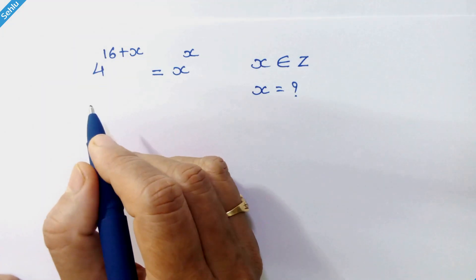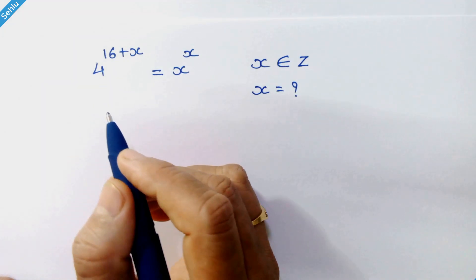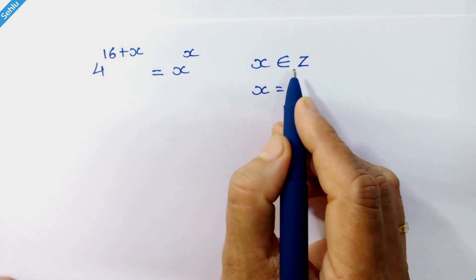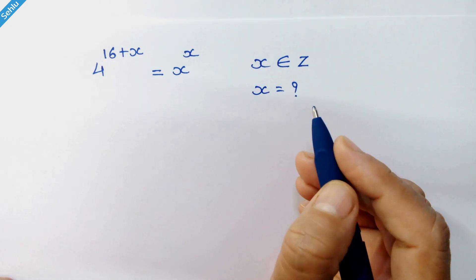Hello friends, we have a nice exponential equation here: 4 raised to 16 plus x equals x raised to x, where x is an integer. So how do we solve this?